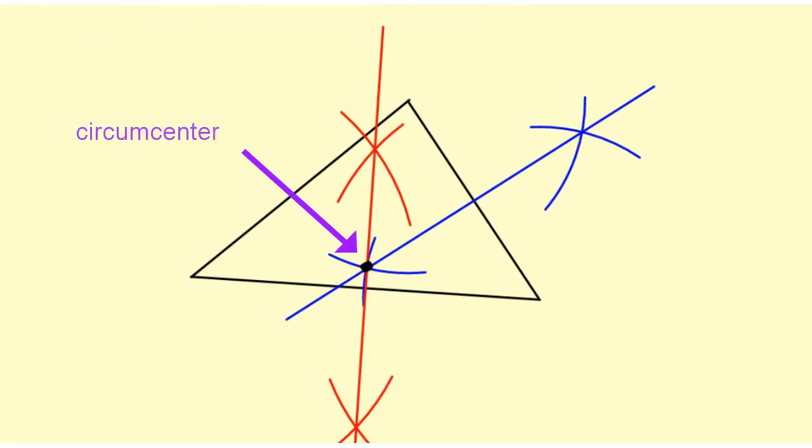This point right here is called the circumcenter and it is the center of our circumscribed circle. The third side here also would have a perpendicular bisector, but we don't need to construct that to get the circumcenter. We just need to construct two of them. If you want to do the third one to just verify that your circumcenter is in the correct place, you certainly can, but two is sufficient.